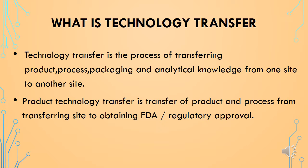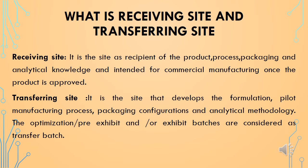Technology transfer is a process of transferring product, process, packaging, and analytical knowledge from one site to another. Product technology transfer is the transfer of product and process from the transferring site to obtaining an FDS or regulatory approvals. The receiving site is the recipient of a product, process, packaging, and analytical knowledge, and is intended for commercial manufacturing once the product is approved. The transferring site develops the formulation, pilot manufacturing process, packaging configuration, and analytical methodology. The optimization, pre-exhibit, and/or exhibit batches are considered as transfer batches.